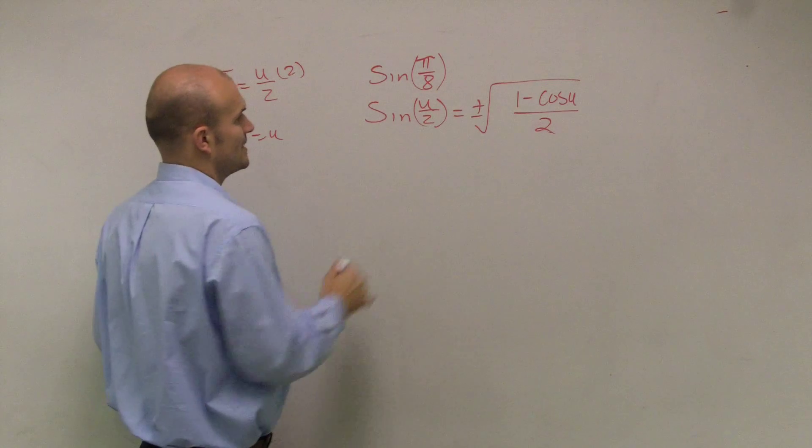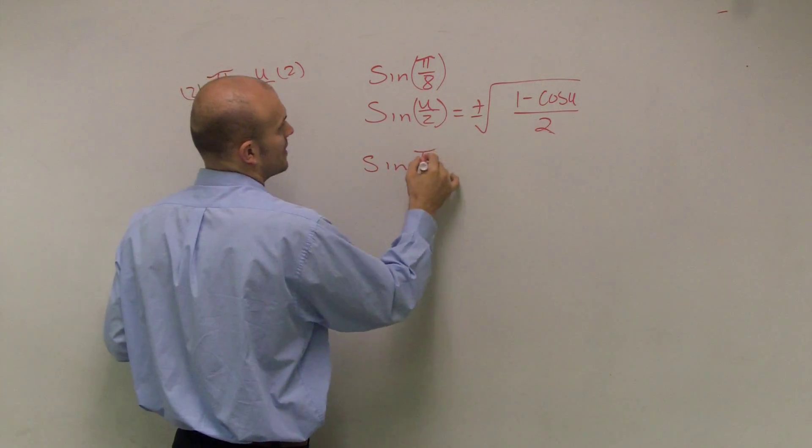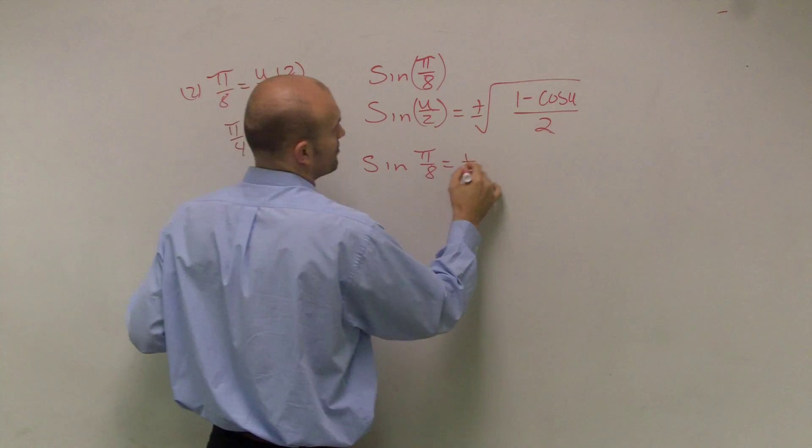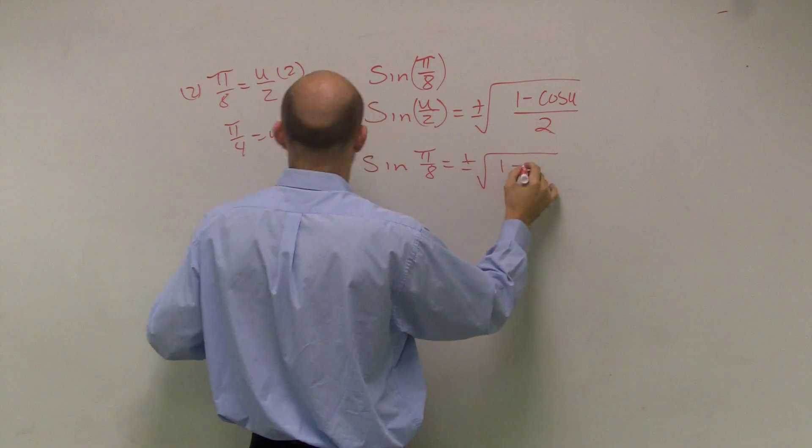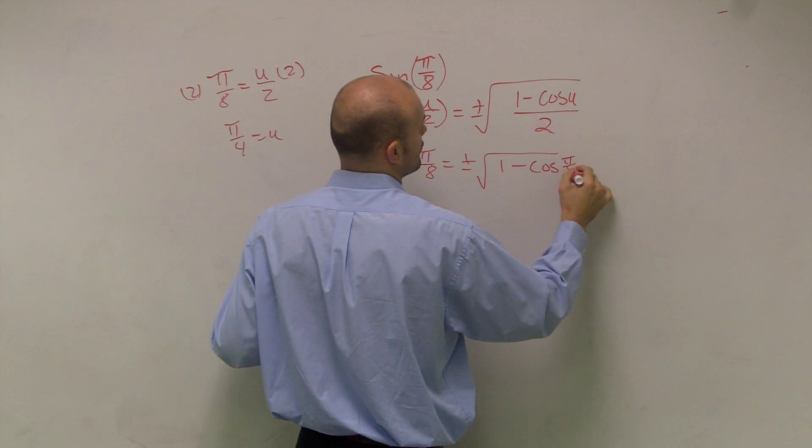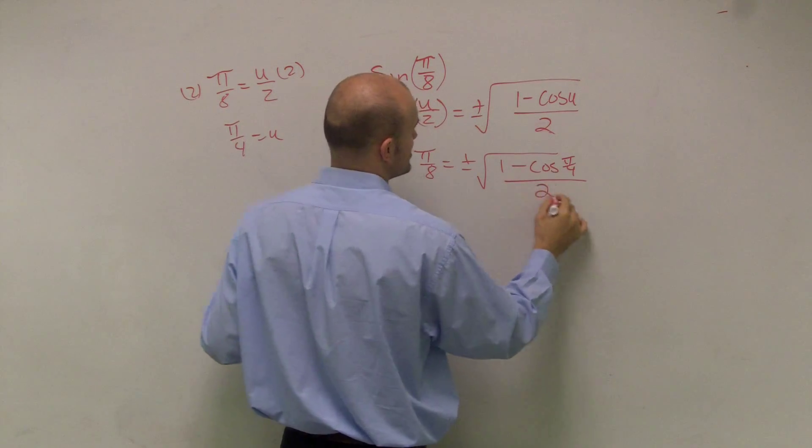Therefore, now what I can do is I'll plug this in. So sine of pi over 8 equals plus or minus radical 1 minus the cosine of pi over 4 divided by 2.